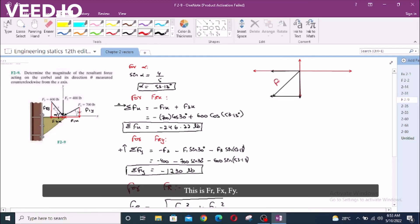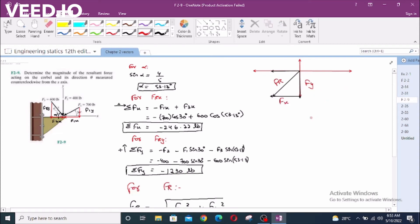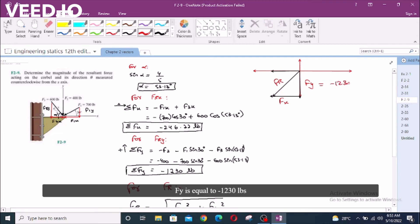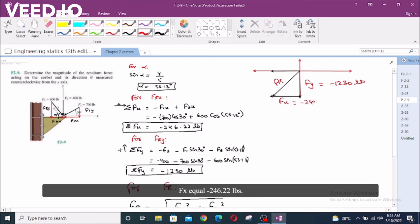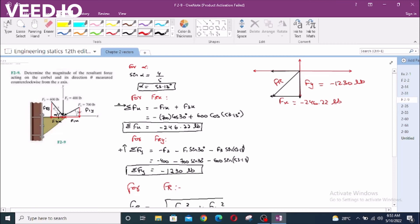Now, the resultant from the tail of first vector to the head of the last vector is here. This is FR. This is Fx. This is Fy. Now, Fy equals negative 1230 lbs, Fx equals negative 246.22 lbs. We are given this.